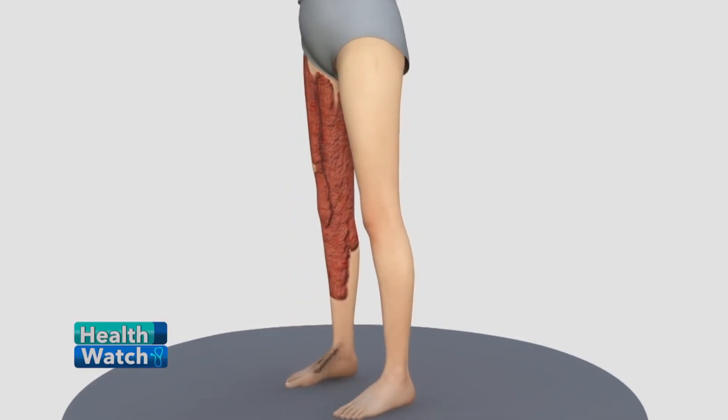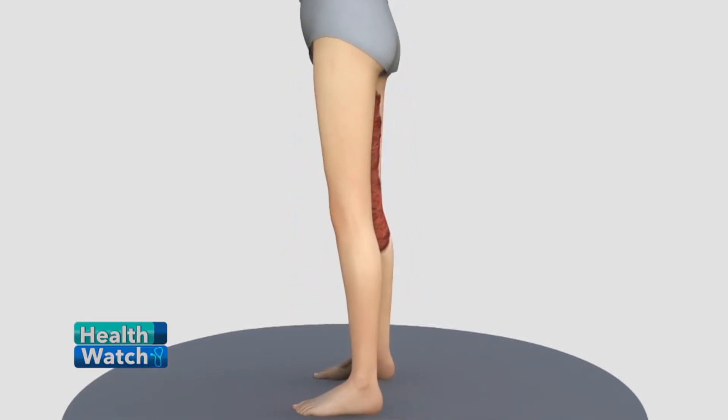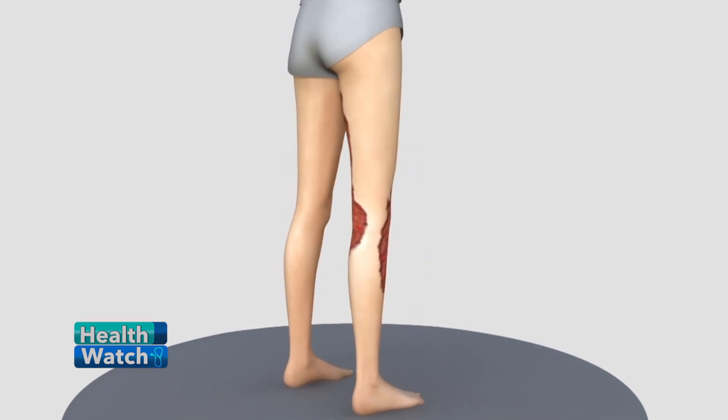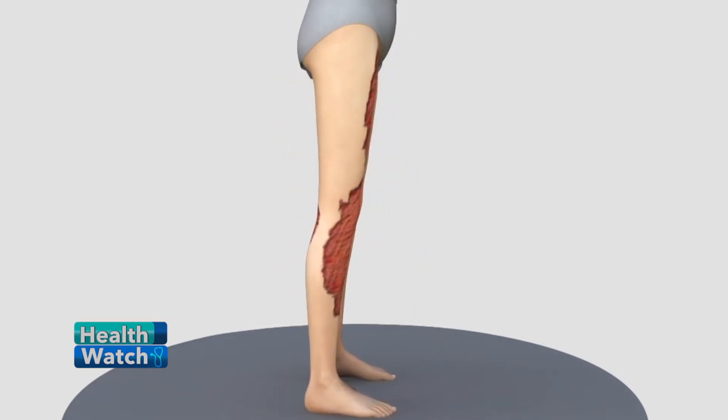Burns can be seen as injury to the human body caused by heat, electricity, chemicals, radiation, or friction. All this depends on what the person is exposed to, and it can affect anyone from children to adults.